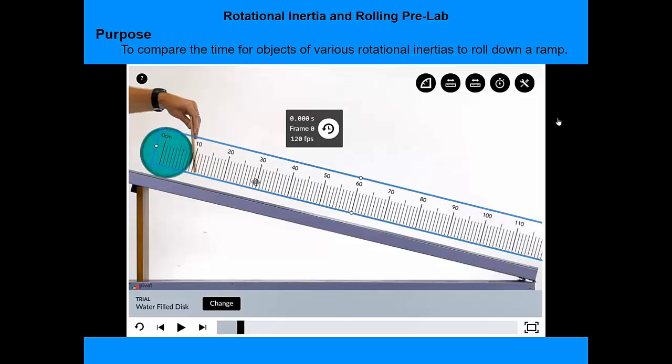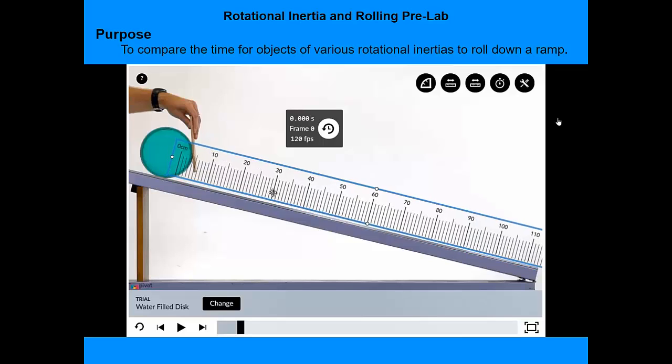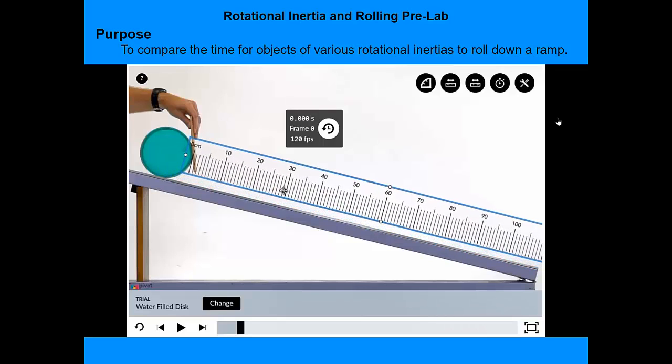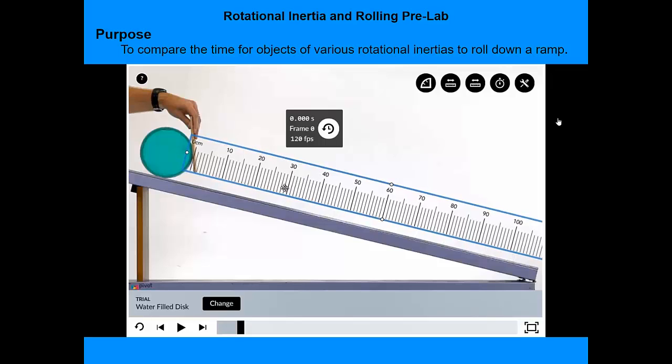Turn the ruler, rotate it until it is parallel to the incline, and then move the zero centimeter mark until it is at a centimeter line at the right edge of it.